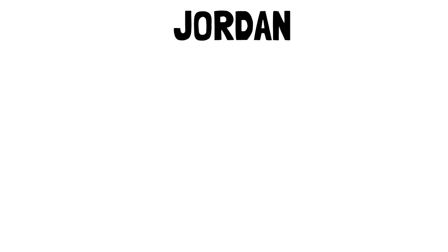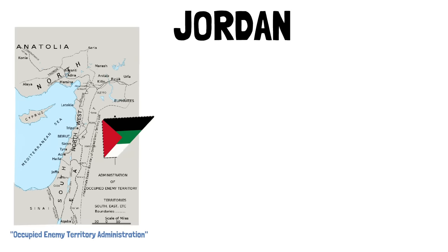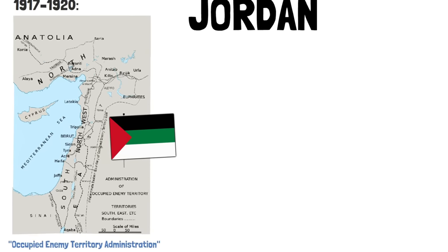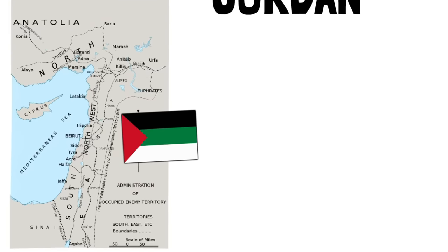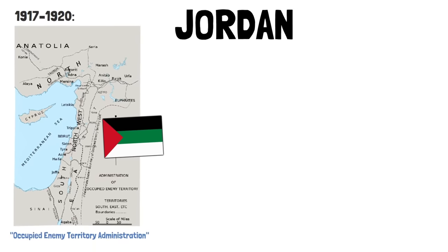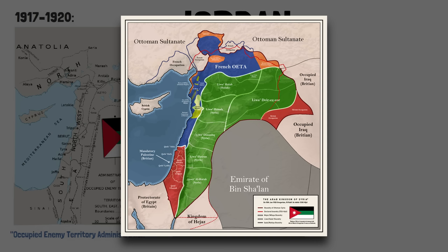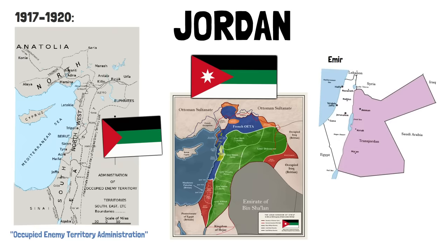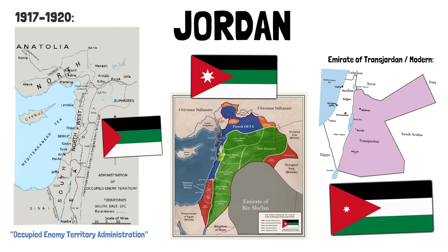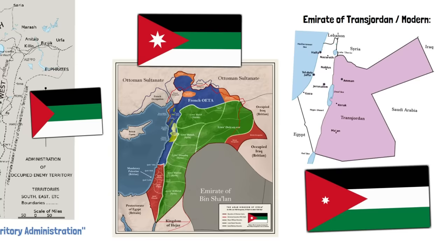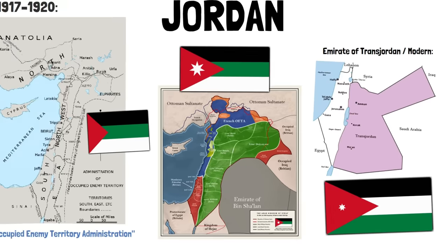Jordan's flag is perhaps one of the most directly connected to the original Arab Revolt. Its first flag is listed as the flag of the Occupied Enemy Territory Administration, an entity created by the Entente and the Arab Revolt to manage liberated Ottoman territories during the war. They then used a flag for four months as part of the Arab Kingdom of Syria, a short-lived state that was then occupied by the French and the British. The British Protectorate of the Emirate of Transjordan used a similar flag, which ended up being the one chosen for the modern Kingdom of Jordan.